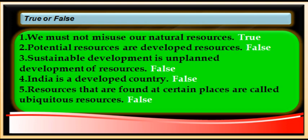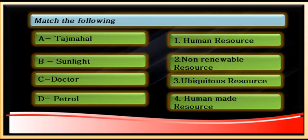Number four is false — India is a developing country, a third-world country, not yet fully developed. Number five is false — resources found at certain places are called localized resources, not ubiquitous resources. Ubiquitous resources are found everywhere.